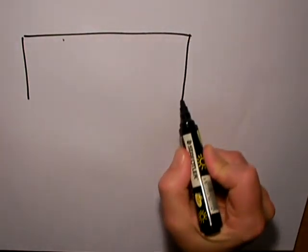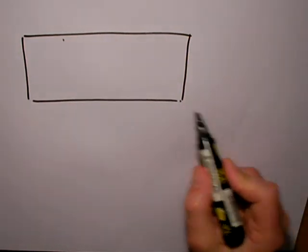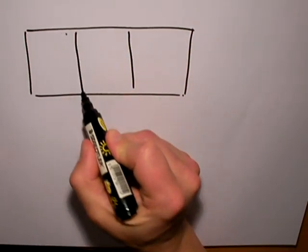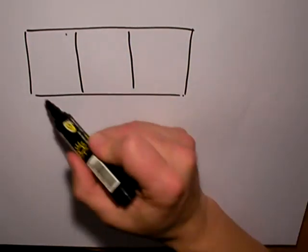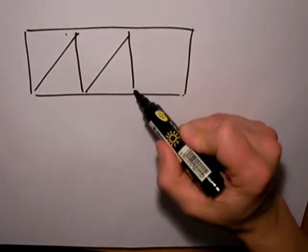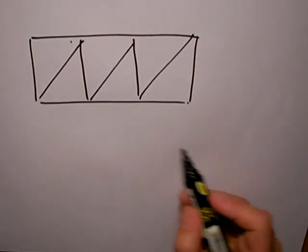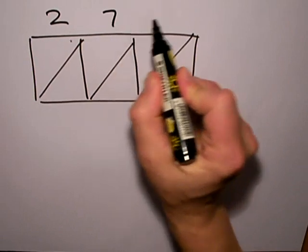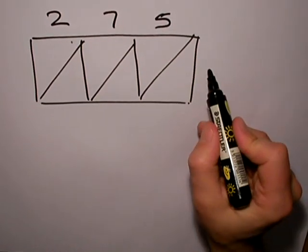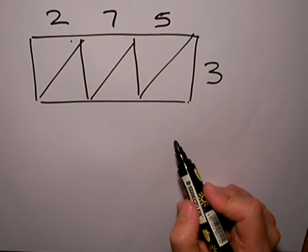I'm going to do a multiplication by a single digit short multiplication using the grid method. I need to draw my grid in first and I'm going to multiply 275 multiplied by 3.